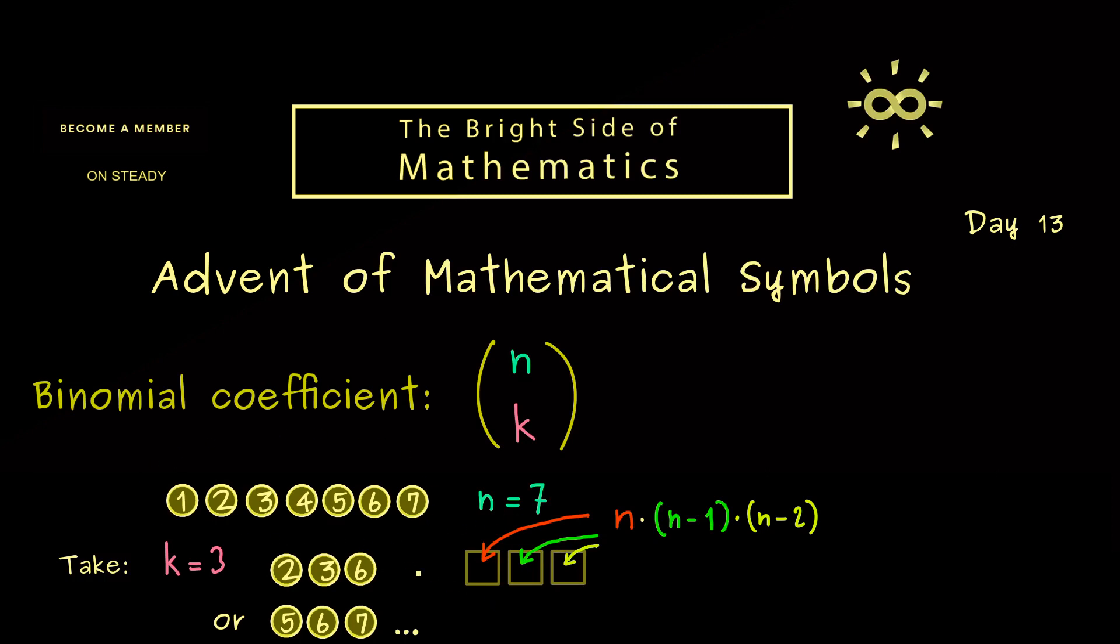However, then you might see we have an order involved. Therefore we have to divide this thing here by the number of orders we have for these slots. Indeed the reasoning now is similar to before. If you want to rearrange the first ball, the first slot, you have 3 positions to choose. Then for the second only 2 remain, and for the last one only 1 remains. And with this we have it.